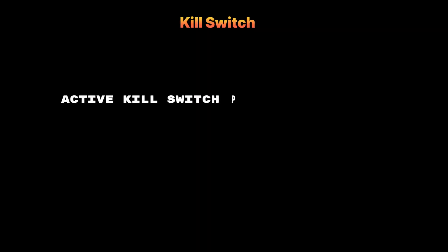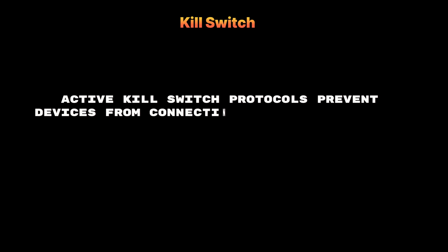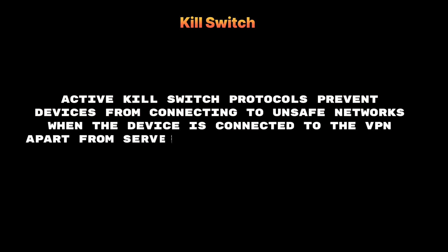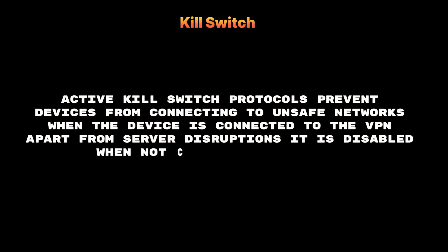Number 1: Active Kill Switch protocols prevent devices from connecting to unsafe networks when the device is connected to the VPN. Apart from server disruptions, it is disabled when not connected to the VPN.